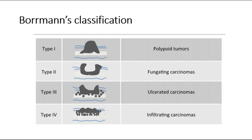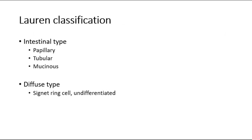Type 4 is also known as diffuse thickening tumour. Another classification is the Lauren classification, divided into two main types: the intestinal type and the diffuse type, where the diffuse type has a worse prognosis.